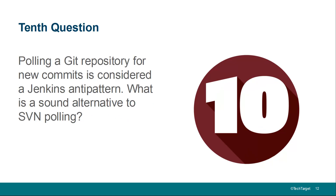Question number ten: polling a Git repository for new commits is considered an anti-pattern. What is a better alternative? We don't like to constantly poll the source code repository asking 'is there a new commit?' — it's just a waste of resources. A better option is to install something called a post-commit hook on your source code repository, on your Git server or GitHub installation. Any time a commit happens to a branch you're interested in building, that commit then triggers the Jenkins build — probably by invoking the build URL. Have the source code repository kick off the build when a new commit has happened to that particular branch.